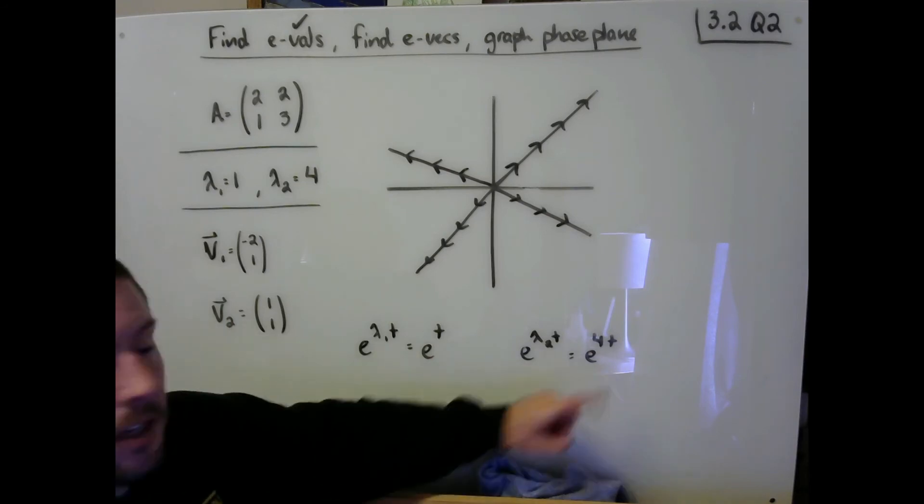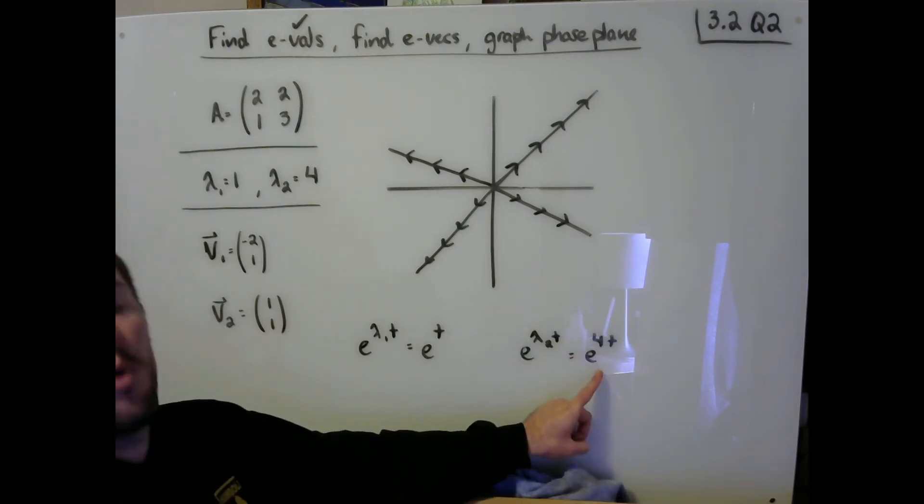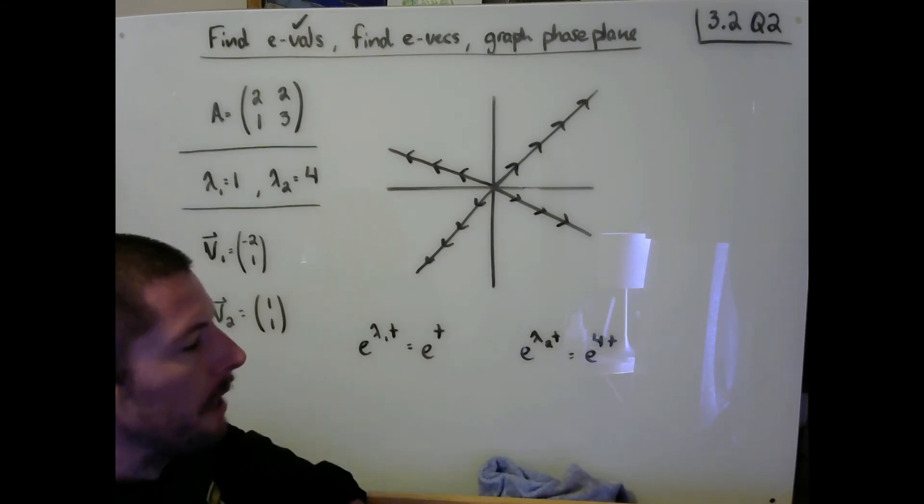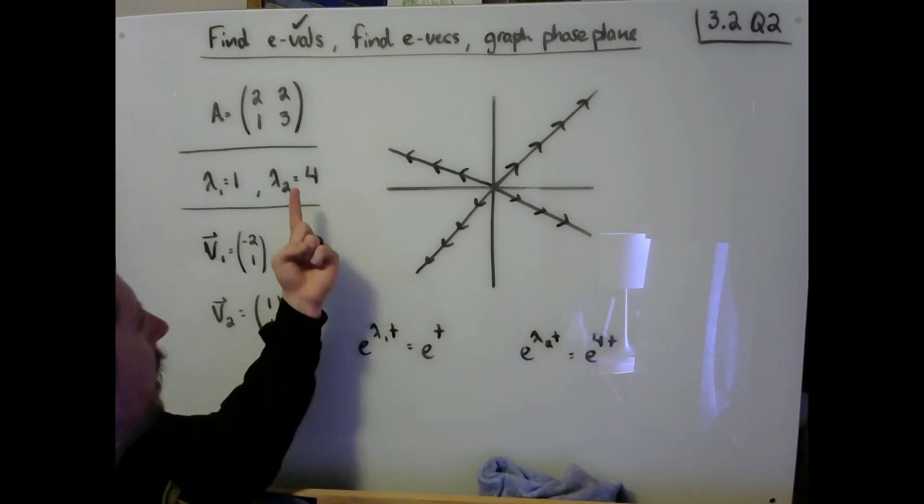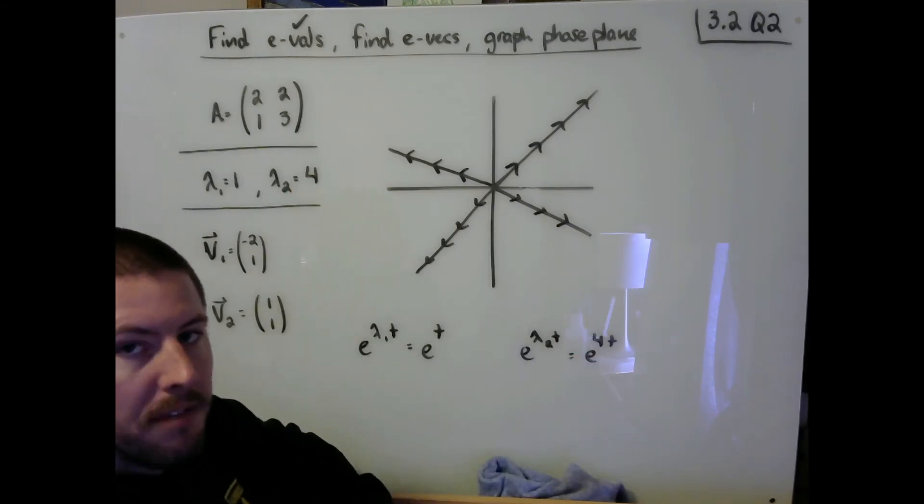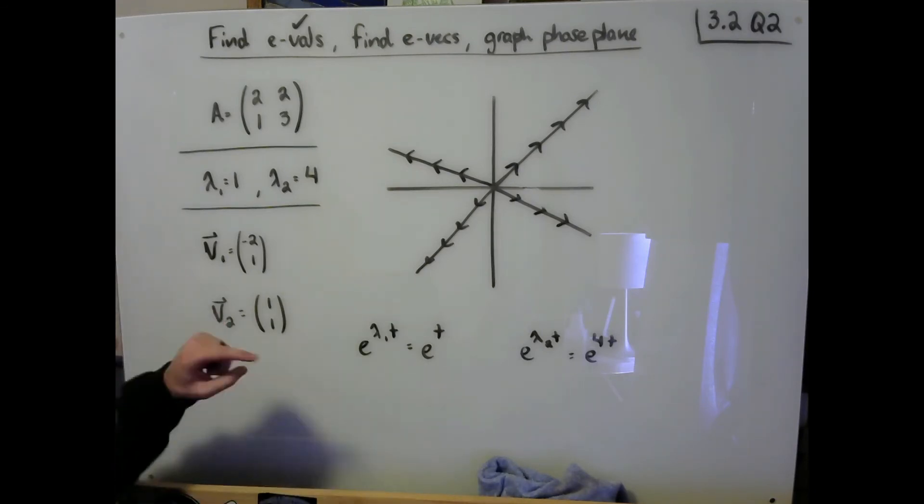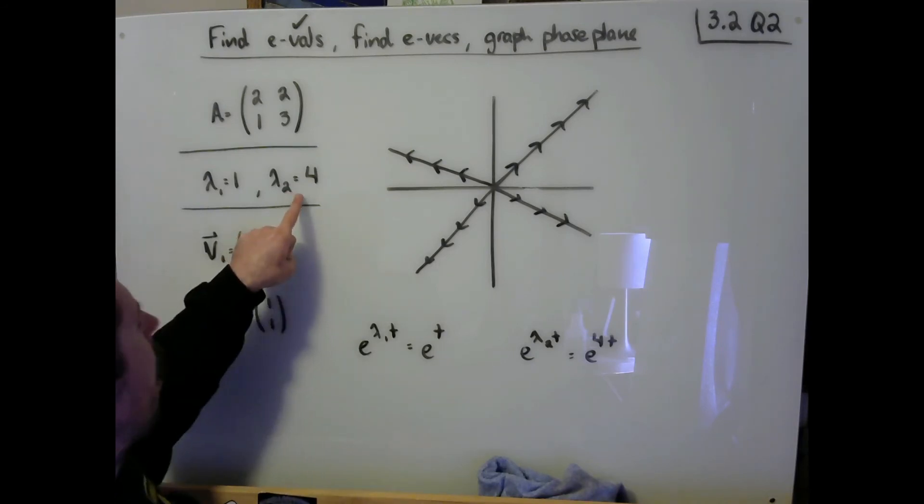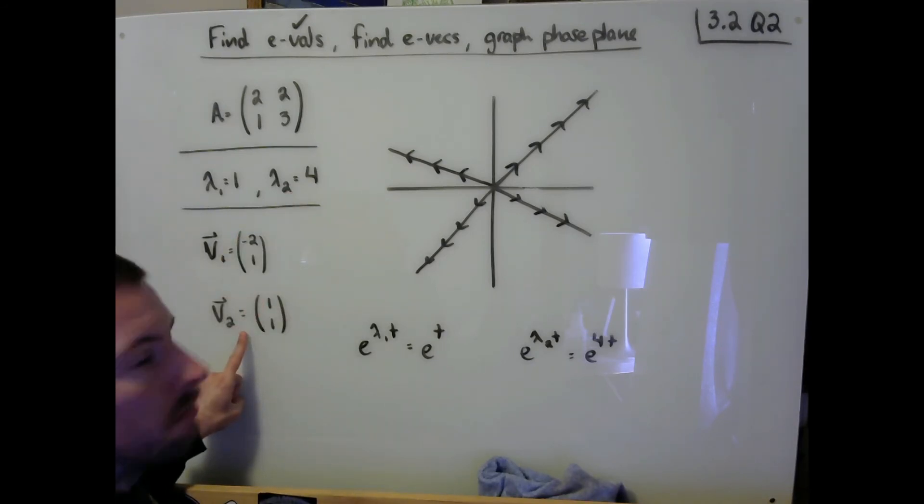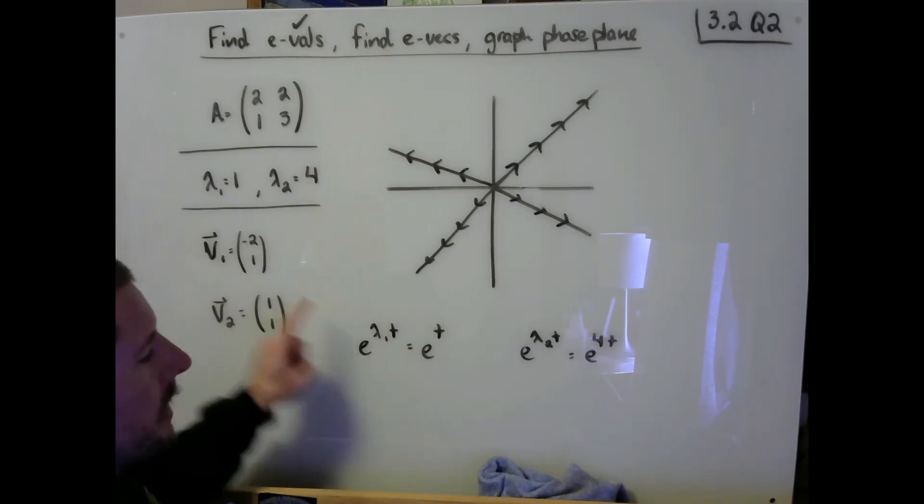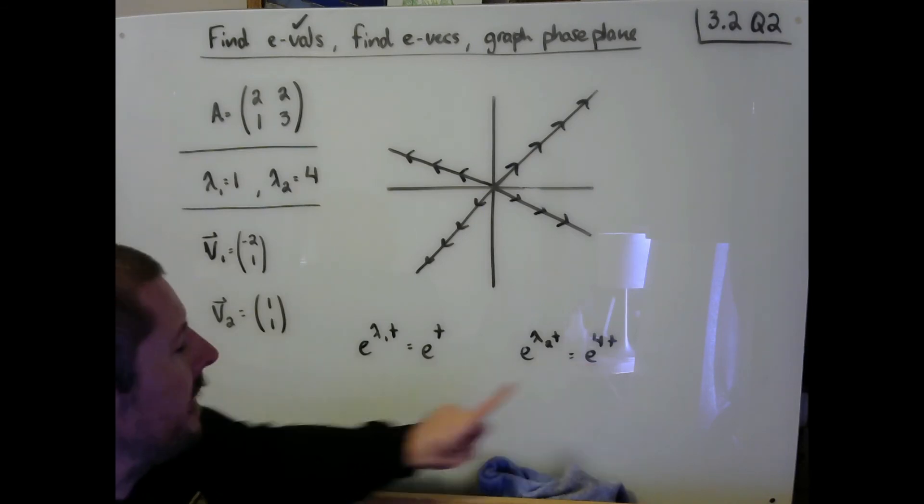So what that says to me is that the eigenvalue of 4 should really end up dominating the behavior of this graph once time has reached a very large value. So what that says to me is that the further out we go in time, the more our graph should be agreeing with v2. So what that means to me is that far away, when t values are large, after lots of time has passed, I expect my trajectories to mostly look like this one. Because I know that this behavior is going to very much dominate this behavior.